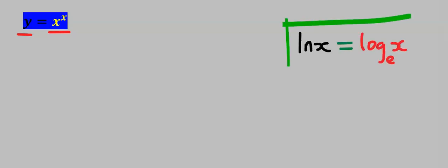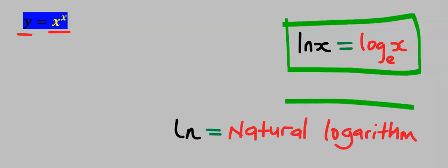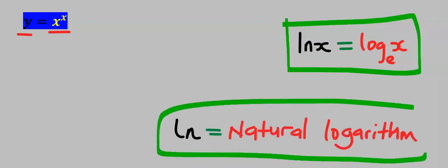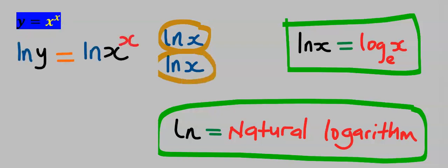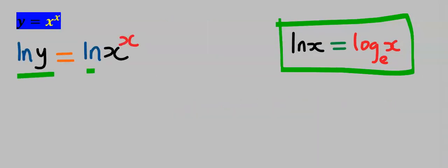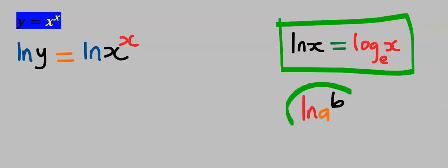Take the natural log of both sides. Recall that the natural log of x is the same as log x to exponential base. Note that ln is a short form of natural logarithm. Hence we have taken the natural log of both sides.